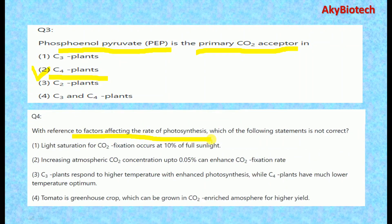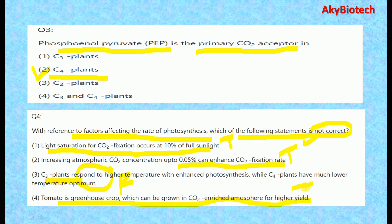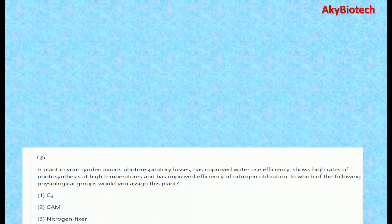Question four: with reference to factors affecting the rate of photosynthesis, which of the following statements is not correct? We have to find the incorrect statement. Light saturation for carbon dioxide fixation occurs at 10% of full sunlight — correct. Increasing atmospheric CO2 concentration up to 0.05% can enhance the carbon dioxide fixation rate — correct. C3 plants respond to higher temperatures with enhanced photosynthesis while C4 plants have a much lower temperature optimum — this is the incorrect statement. Tomato is a greenhouse crop which can be grown in a CO2-enriched atmosphere for higher yield — correct.